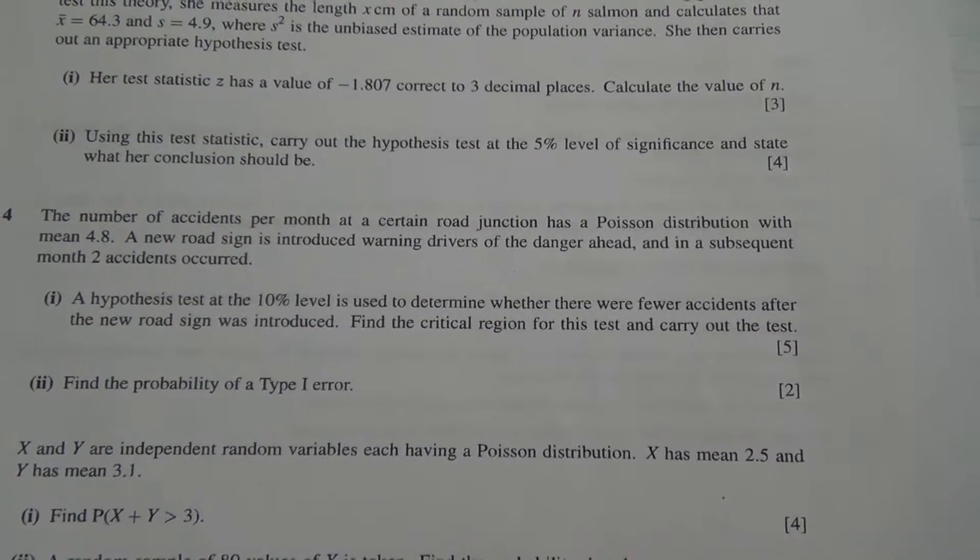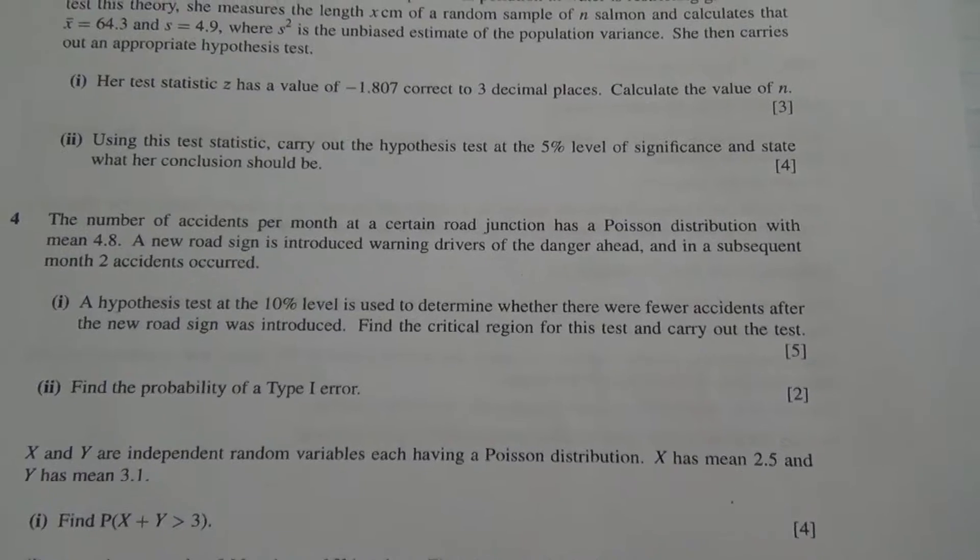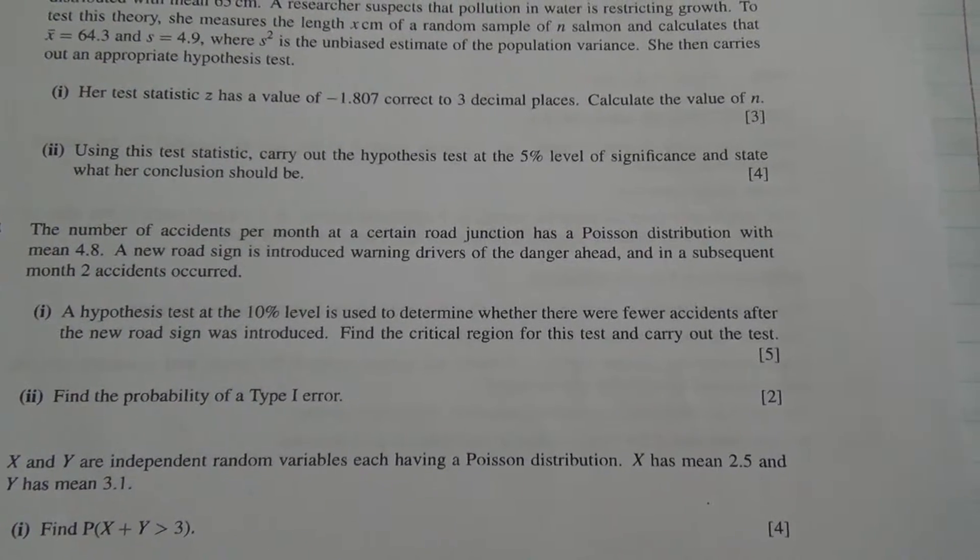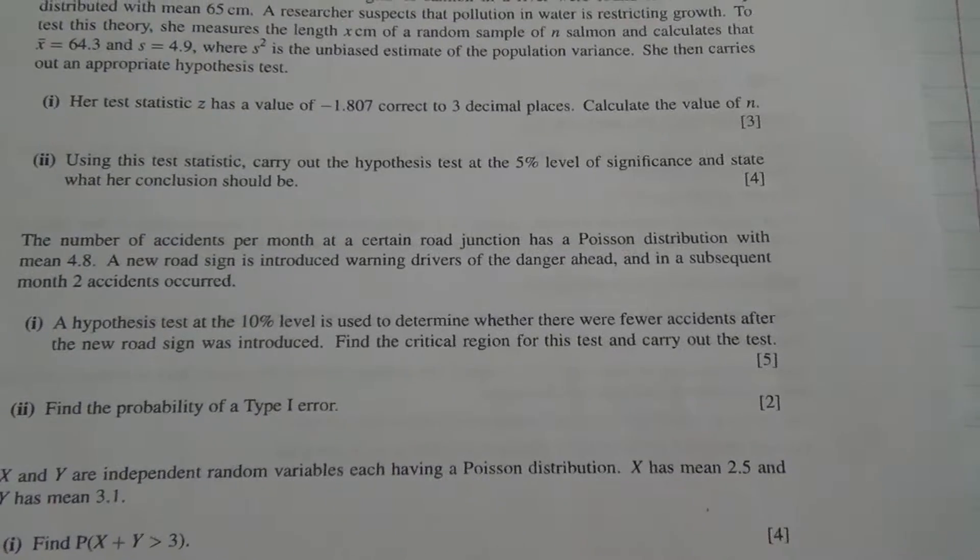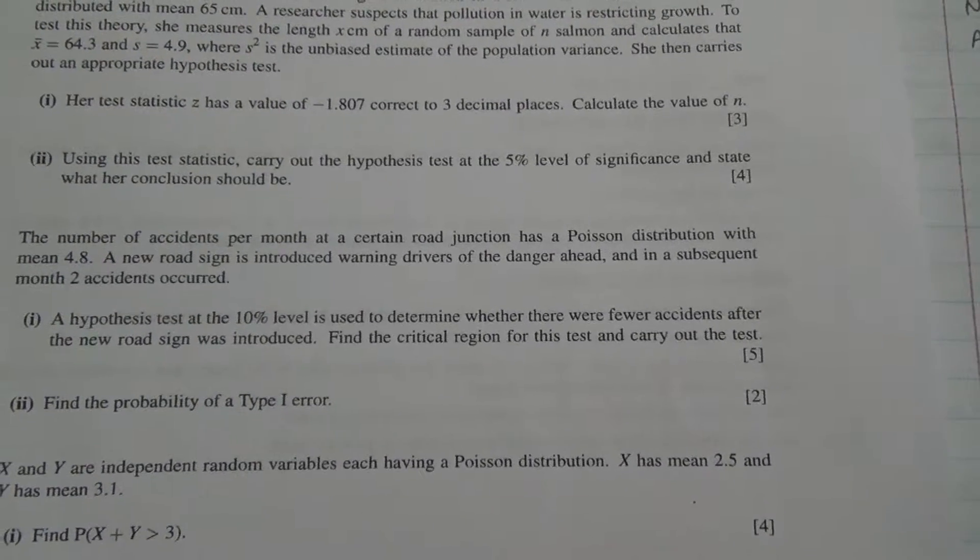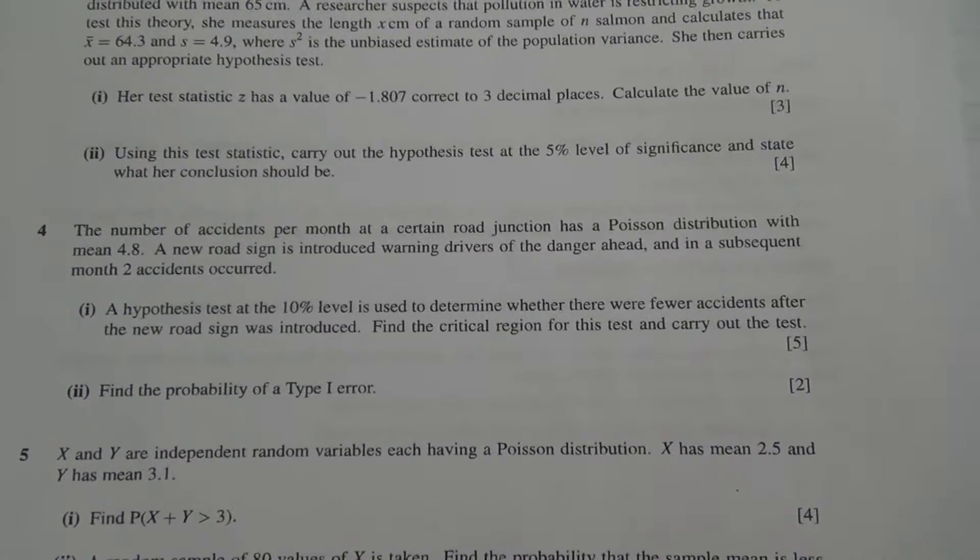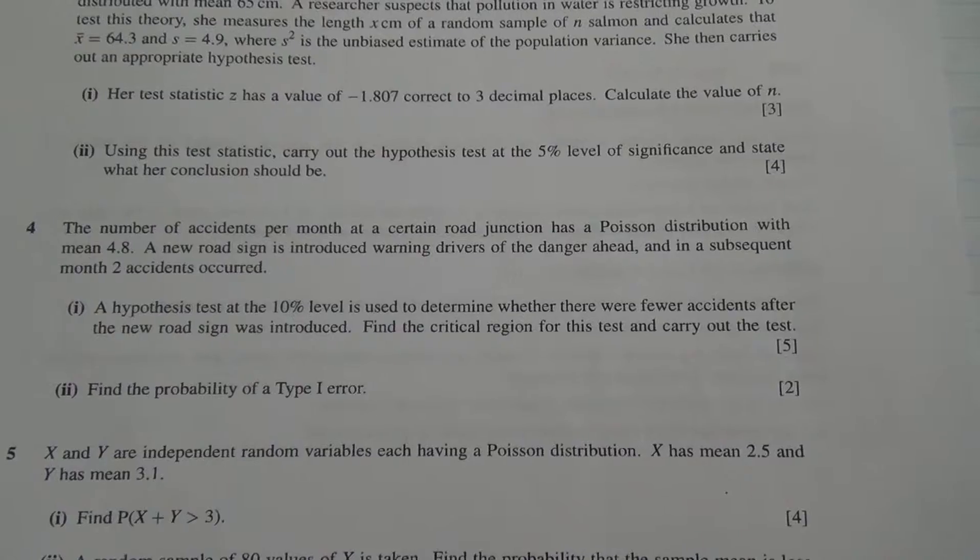First part, a hypothesis test at the 10% level is used to determine whether there were fewer accidents after the new road sign was introduced. Find the critical region for this test and carry out the test. For the second part, we need to find the probability of a type 1 error.